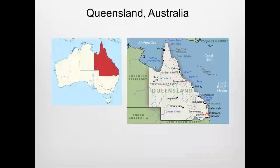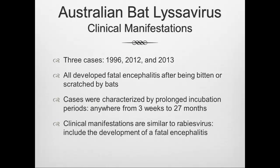Queensland, Australia — including Brisbane and Cairns — is where the cases were described. It's in the northeastern part of the continent with forested areas adjacent to the Great Barrier Reef. Three confirmed human cases occurred: 1996, 2012, and 2013. All developed fatal encephalitis after being bitten or scratched by bats. Cases were characterized by prolonged incubation periods of three weeks to 27 months, with clinical manifestations similar to rabies, including fatal encephalitis.